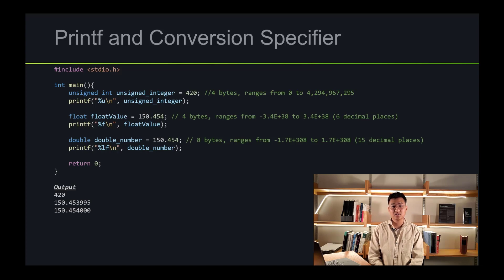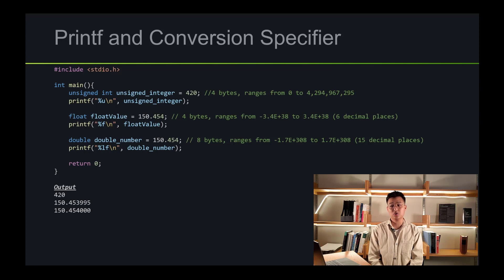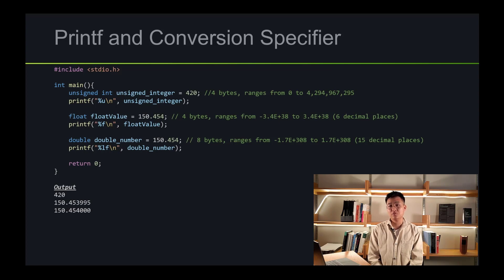The next data type is unsigned integer. The conversion specifier for unsigned integer is %u. I set unsigned integer to 420, and if you look at the output, it gives us 420. Unsigned integer is different from integer — it is also 4 bytes. However, unsigned integer only contains positive numbers, ranging from 0 all the way to 4 trillion.